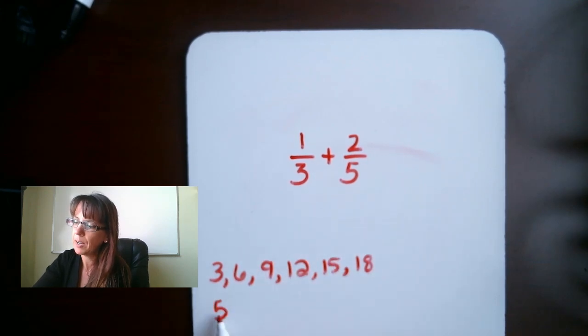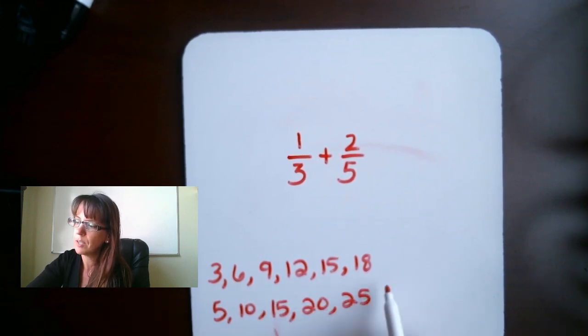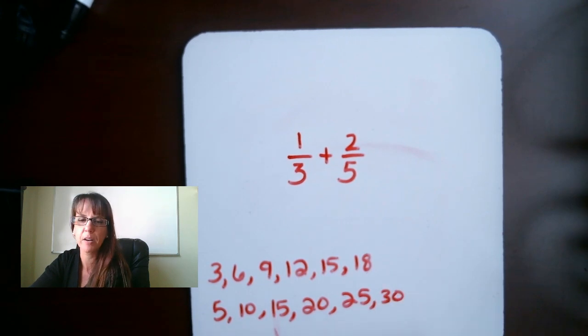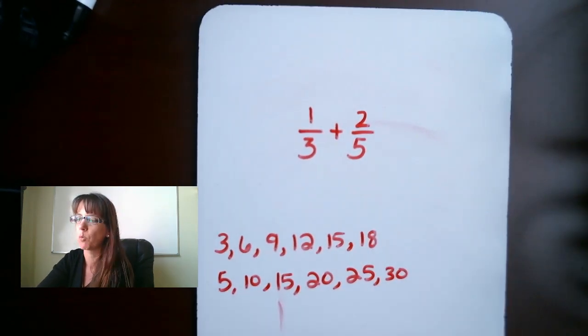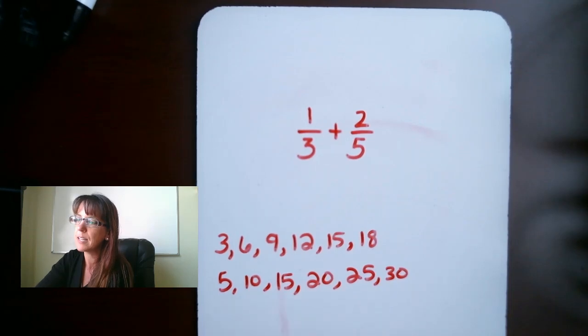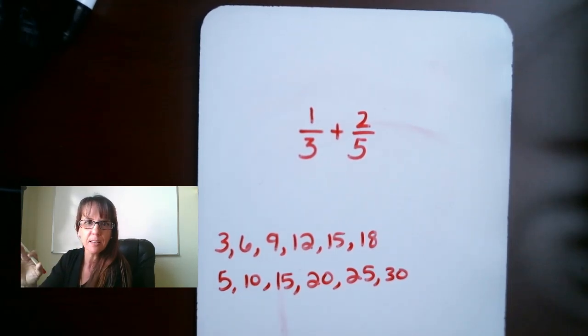For our 5s, we have 5, 10, 15, 20, 25, 30. I keep going on, but I don't need to, because what we're looking for when we're finding our least common denominator is that we are looking for the smallest least common multiple that they have in common.